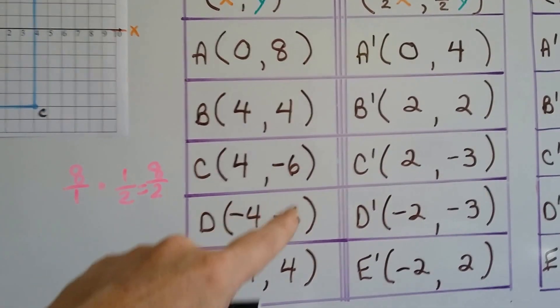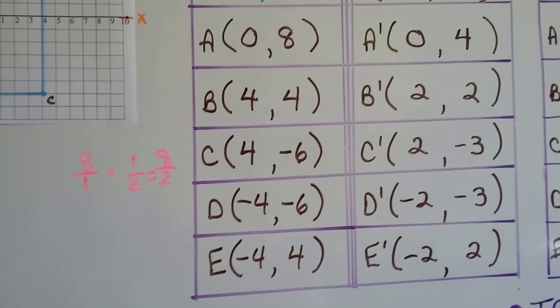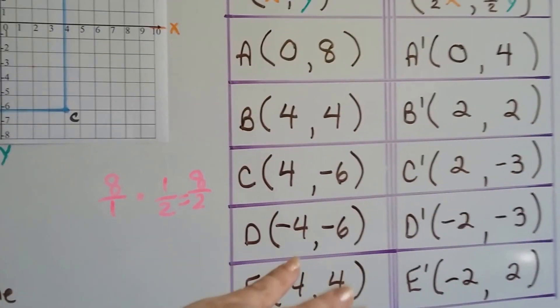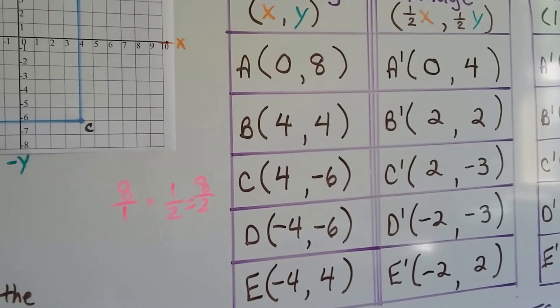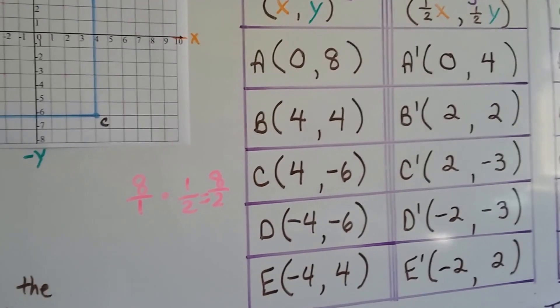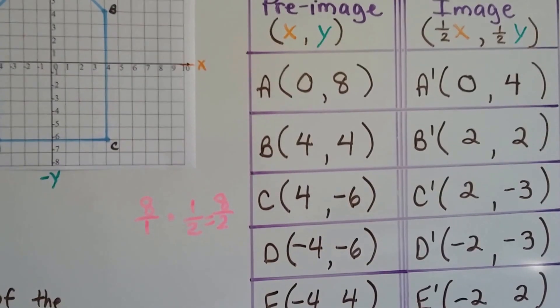You could even do it mentally real quick and just say, what is half of these numbers? What is half of 8, half of 4, half of negative 6, half of 4? And you could just do them very quickly that way. If you have to show your work, you can just do your multiplication real quick.